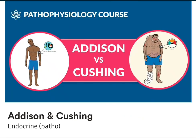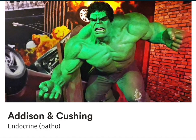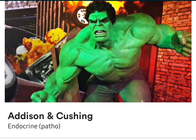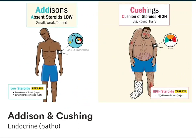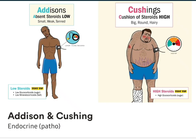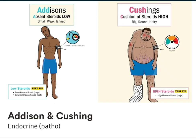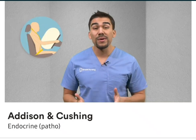Addison's and Cushing's is all about the steroids. Typically, when we think of someone on steroids, you think of some big, hairy weightlifter. So in the same way, in Addison's, think we have an absence of steroids — we have too little. We need to add some in Addison's. Clients typically present small, skinny, and very frail and weak with a very odd tan. And with Cushing's, it's the exact opposite — big, round, and hairy. So think a big cushion of steroids with Cushing's, basically too much cortisol.